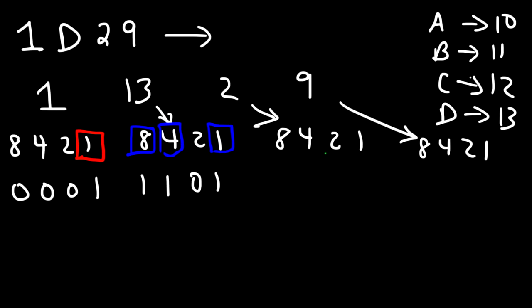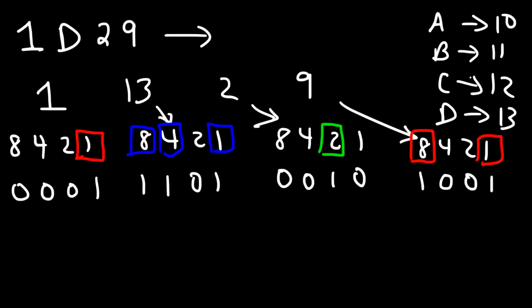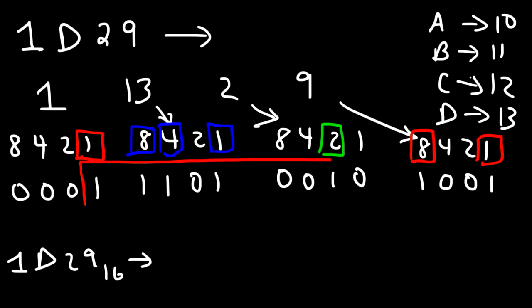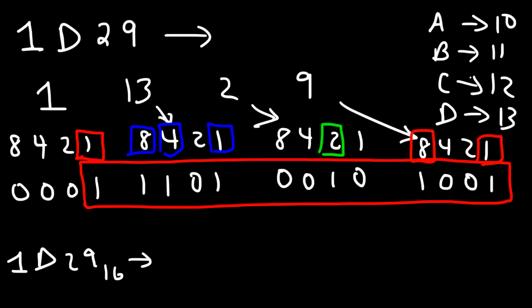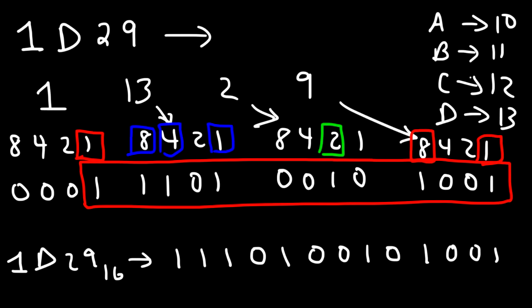To get 2, we only need the 2 place value, so that's 0010. To get 9, we add 8 and 1, giving us 1001. So the hexadecimal number 1D29 is equivalent to the binary number 0001 1101 0010 1001 — starting from the first significant 1, that is 1 1 1 0 1 0 0 1 0 1 0 0 1.